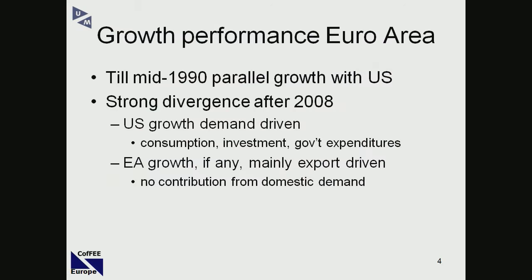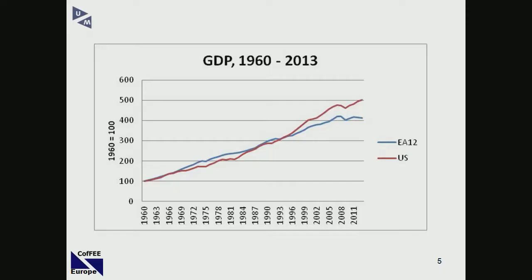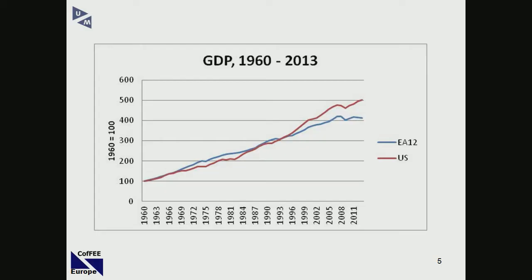I'd like to start with the growth performance in the Euro area. Looking at a chart from 1960 showing US and European economy growth, what you see is that the European economy and the US economy were more or less growing hand in hand until the mid-90s, around 1993. And then all of a sudden we start to diverge. The European economy stagnates at about four times its initial level, whereas the US economy goes through to five times its initial level.